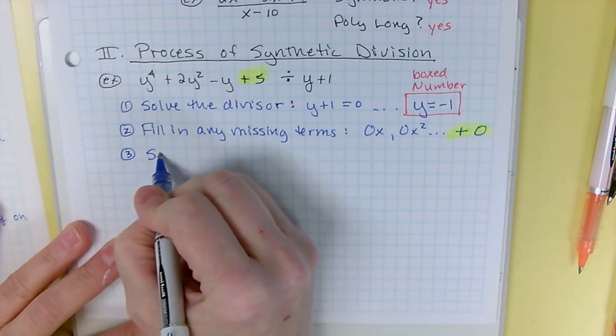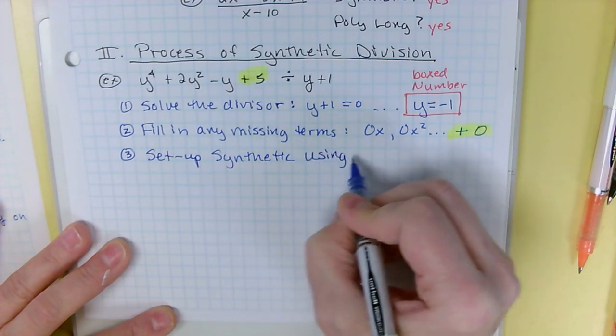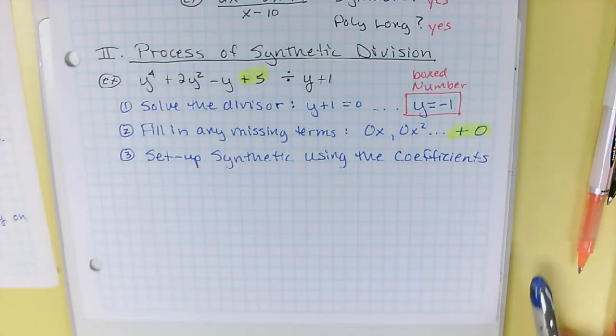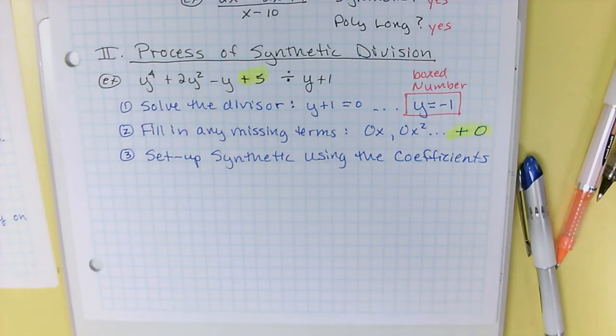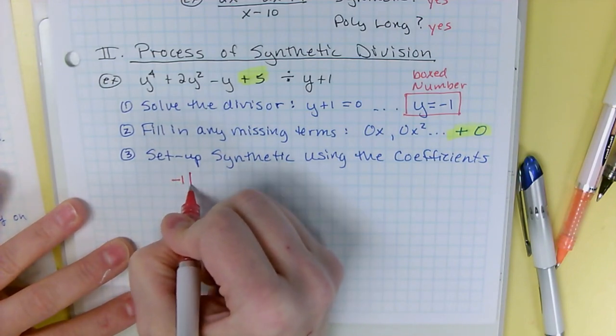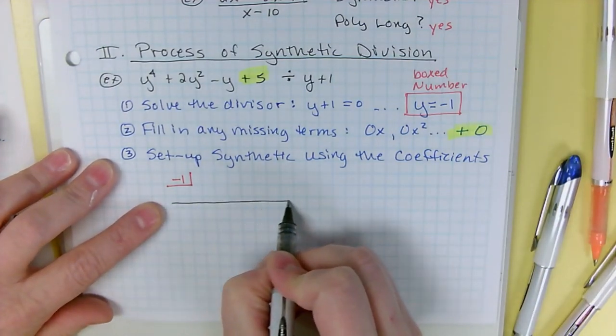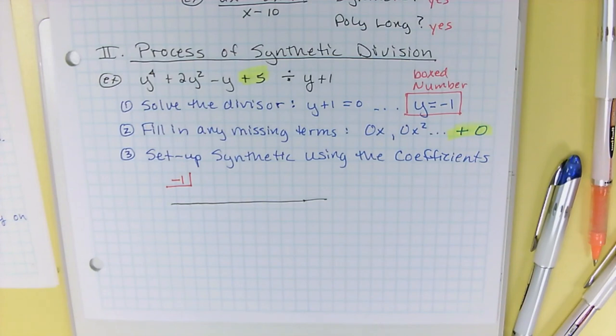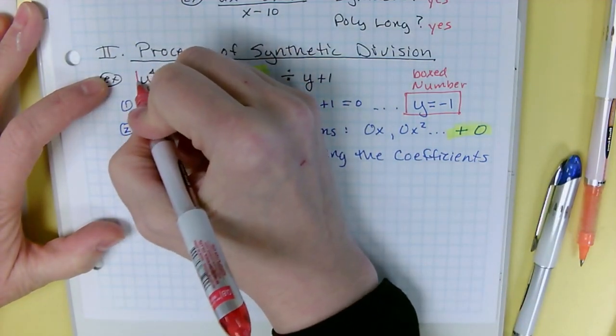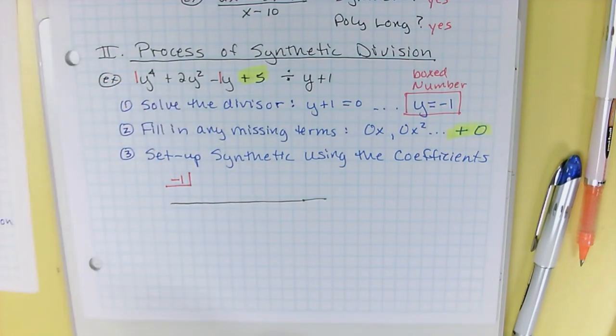Okay, number three, you're going to set up synthetic using the coefficients, which are the numbers attached to the letters. Okay, so your box number is -1. So we put that in a full box or a half box, and then you want to skip a line, draw a line. And here's where we're going to fill in the coefficients. Now, what you might consider doing is just with your pencil. This is a 1y⁴. That's a -1y. We're missing a y³. So we do have something to fill in.